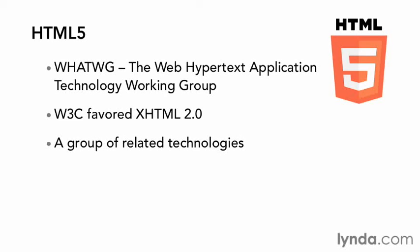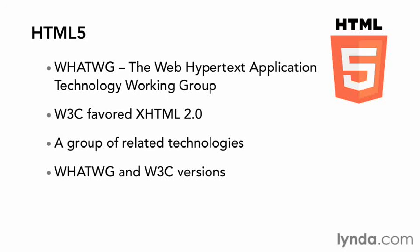HTML 5 is actually a group of related technologies of which HTML is just one part. These technologies include a number of DOM, or Document Object Model, interfaces typically accessed with JavaScript, including web workers, geolocation, drag-and-drop, offline storage, and much more. The WhatWG and W3C versions of the full HTML specification do not always agree and do not even have the same list of technologies included. But they do agree on the HTML markup, and that's the part of the specification we're concerned with in this course.